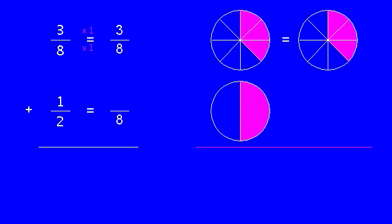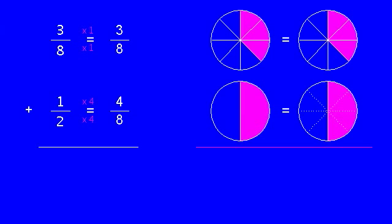So from halves to eighths is times four, so one times four is four. Now the pieces are the same size and we add the number of pieces. Four plus three is seven eighths.